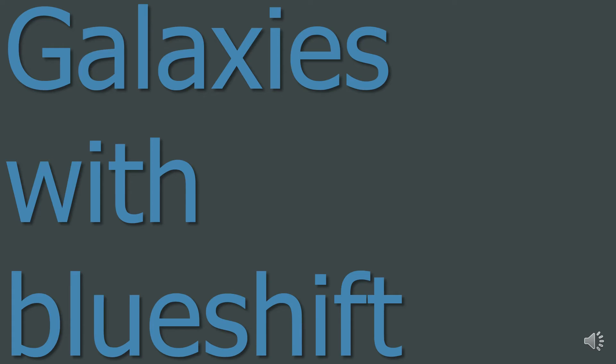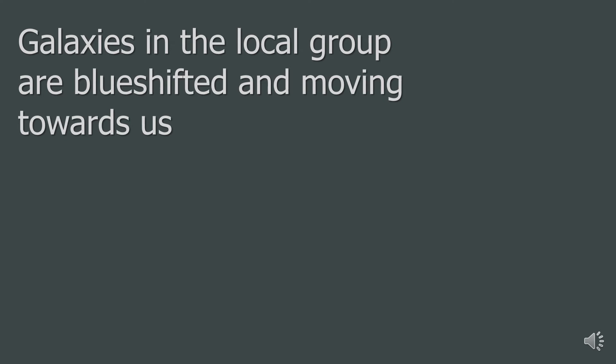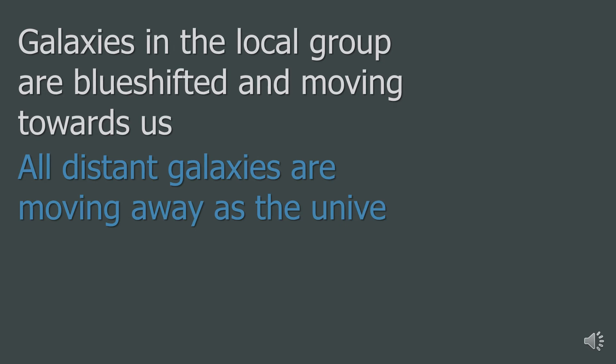2. Galaxies with blueshift. So if galaxies with redshift are receding, then approaching galaxies will be blueshifted. The galaxies in our local group are actually blueshifted, so Andromeda, the Triangulum galaxy, are all approaching us. These handful of galaxies are the only ones in the whole universe that are approaching us. All others are moving away. This is because the universe is expanding.